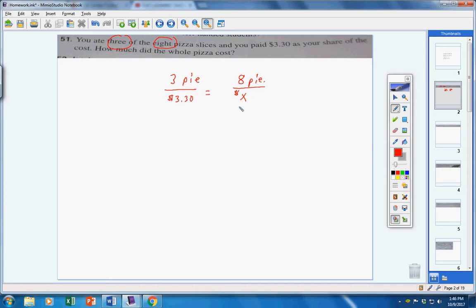Let's cross multiply here. Three times X is 3X. Eight times 330 is 2640. Now simply divide both sides by three, and X equals $8.80. That's the cost for eight pieces, or in other words, that's the cost for the whole pizza.